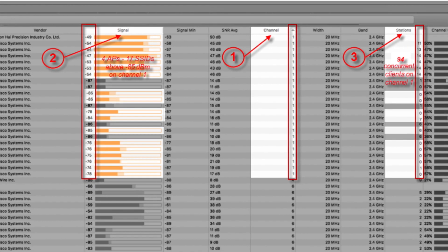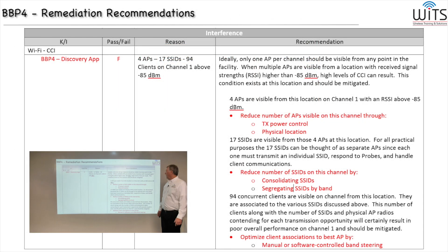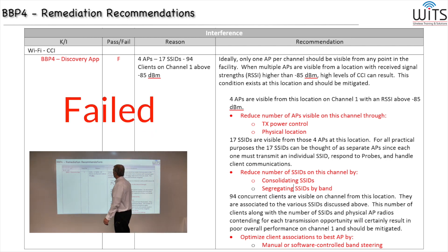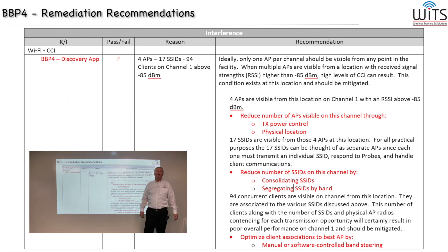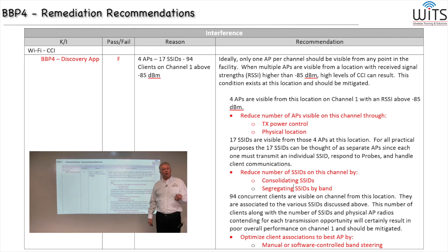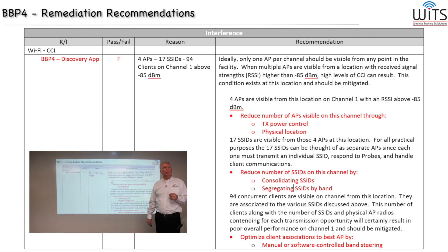If you add 94 and 17 together, that's how many devices are contending to send out a transmission — that's too many. Baseline best practice number four fails. The reason why is four access points, 17 SSIDs, and 94 clients all on channel 1, all within hearing distance of each other. Whether this has been left to automatic radio resource management controls or configured manually, it's not working properly. There should not be that many devices all on channel 1 in one area.